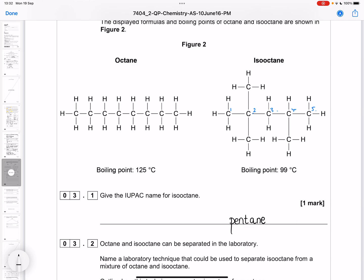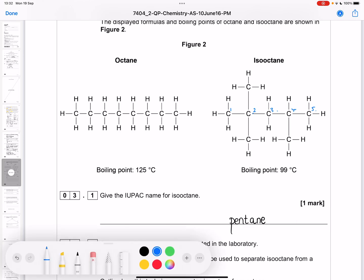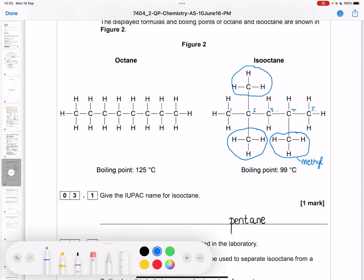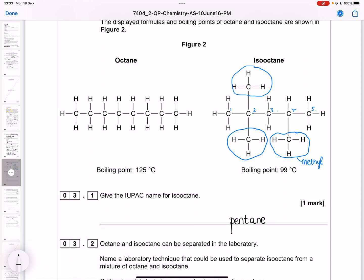We need to look at what we haven't named already. We've named the longest carbon chain from 1 to 5, but this group here is not in that name, or this, or this. All three of these groups need to be added to the name. They're all the same, they're all methyl groups, 1-carbon chains.